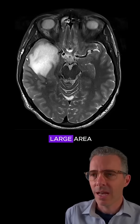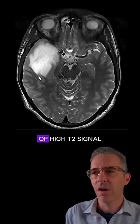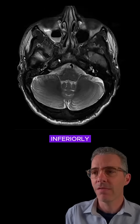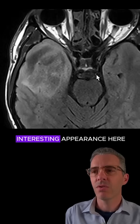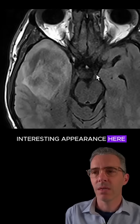What we see here is a very large area of high T2 signal, extending all the way inferiorly. Now, when we move over to FLAIR, we see quite an interesting appearance here.